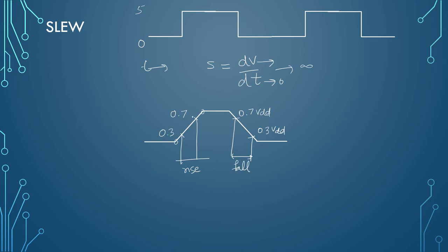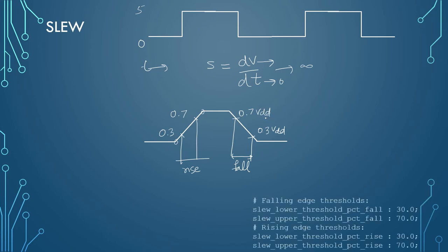To specify these threshold points at the rising and falling edges, the tool understands the commands. For example, falling edge thresholds can be specified like this: slew_lower_threshold_percentage_fall 30 will be the first value at the fall, and slew_upper_threshold_percentage will be 70%. Like this we can specify. Also we can specify for rising edge in a similar manner. These commands come in very handy at the time when somebody would be creating the libraries or the timing models for the specified cells.